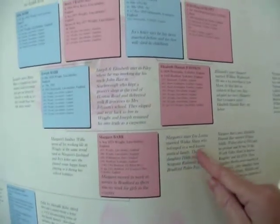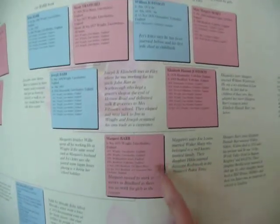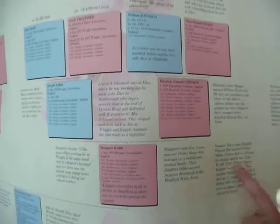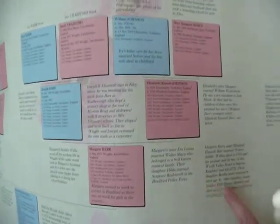Apparently Margaret's sister married Walter Sharp, who belonged to a well-known musical family — I can't find much about them on the internet. Their daughter Hilda married Sergeant Rushworth in the Bradford police force. Then Margaret had another sister, Elizabeth Hannah, who married Walton Siddle, who appears to be from the Worth Valley Hotel in Ingro. I don't know if anybody knows much about that branch.